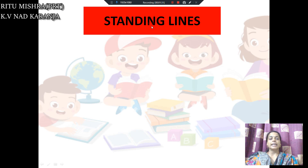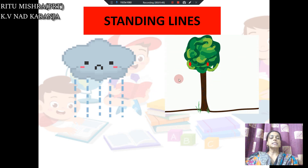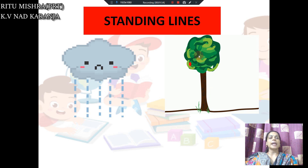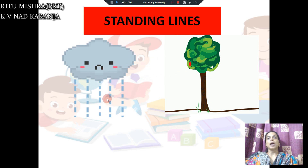The first thing is the standing line. You can see this picture — this picture is showing that the rain is falling. So you can see the pattern of rain, how the rain is falling. Similarly, we will see one more picture. This is a picture of an apple tree. You can see that apples are there on the tree. By seeing these two pictures, we can understand the concept of the standing line.